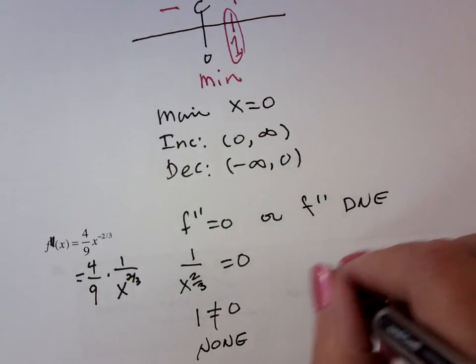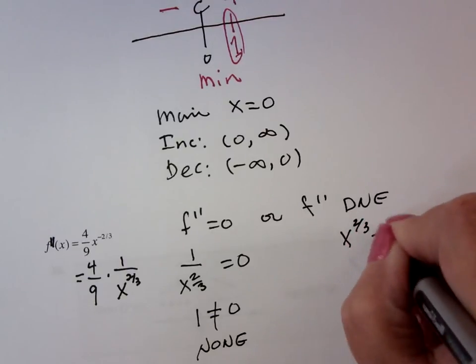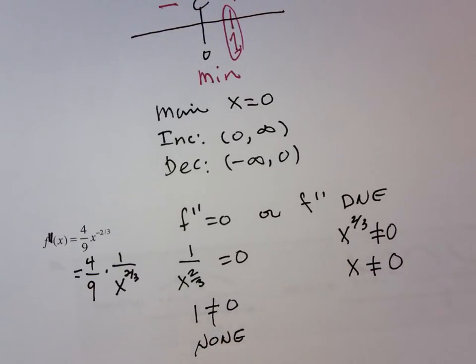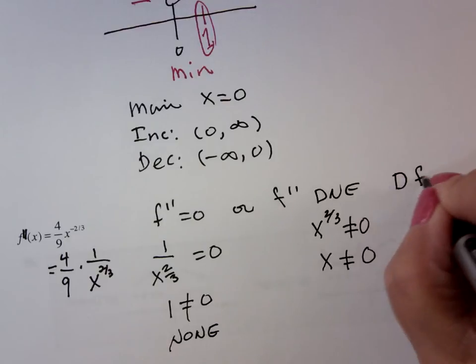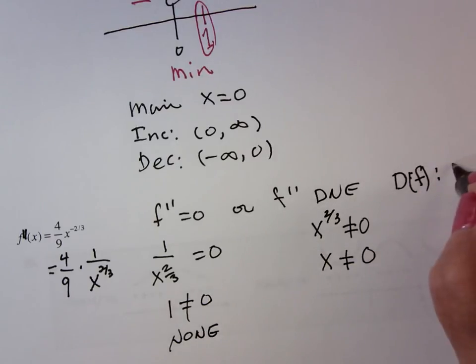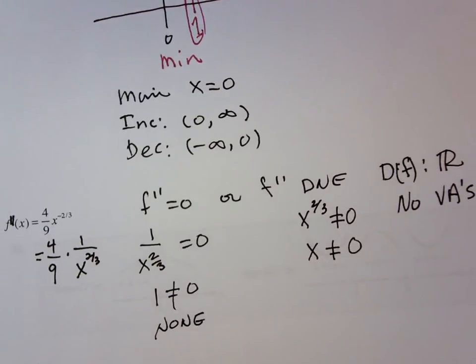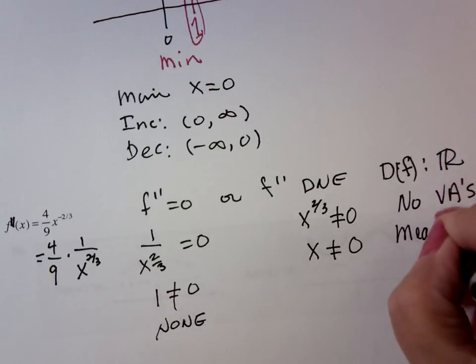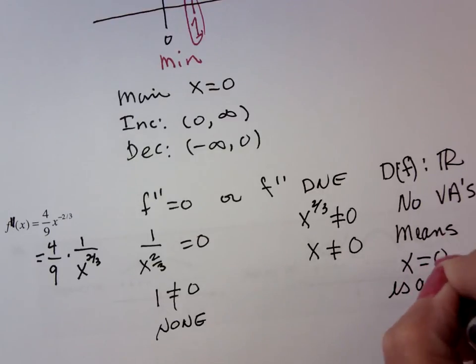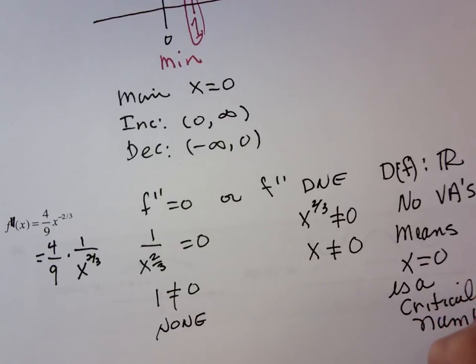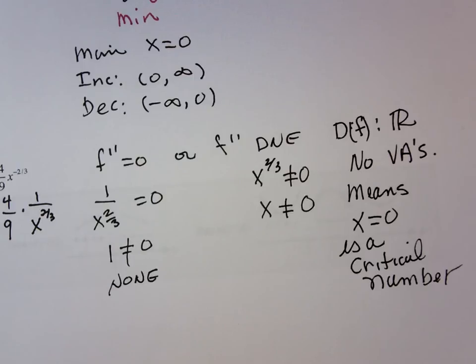Or f double prime does not exist. That's where the denominator can't be zero, or x can't be zero. Now this is where what we know becomes important. The domain of f was what? All real numbers. And it had no VAs. We know that. That means that x equals zero is a critical number, which means it could be an inflection point or not.